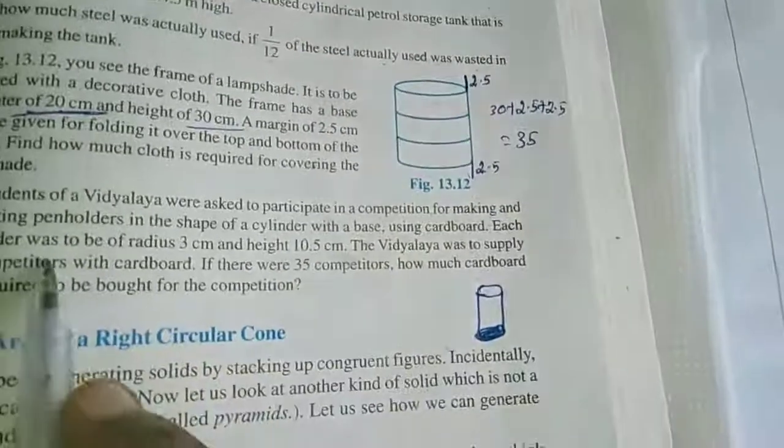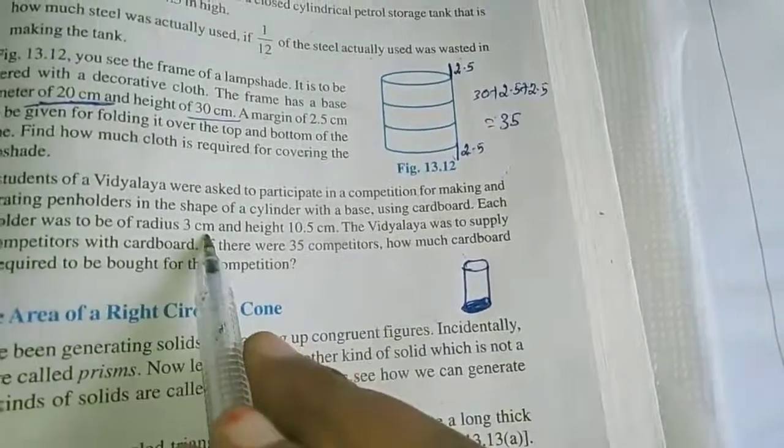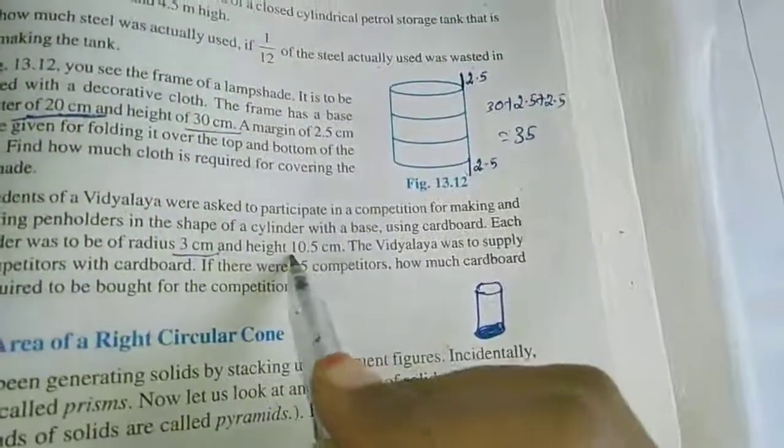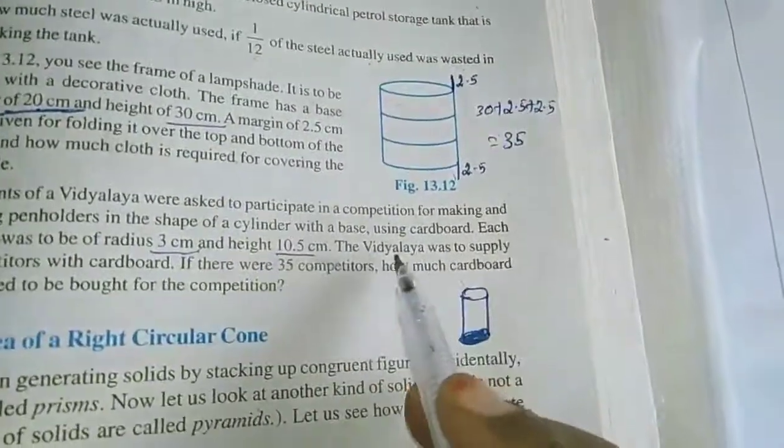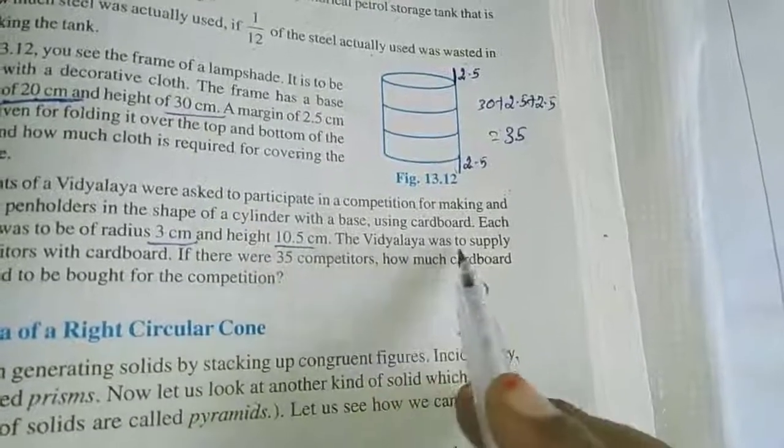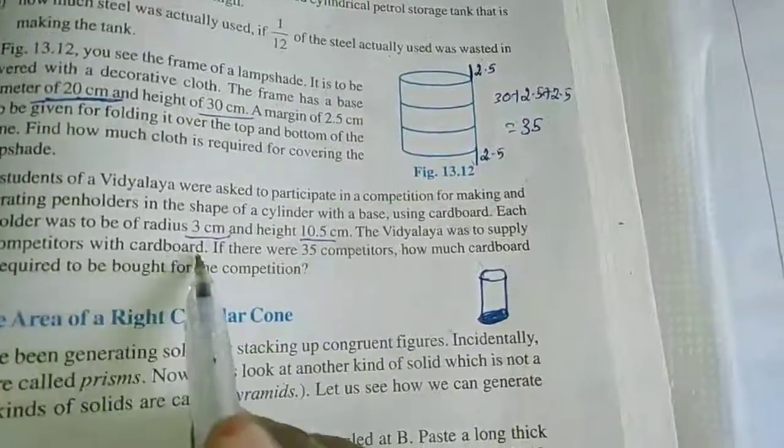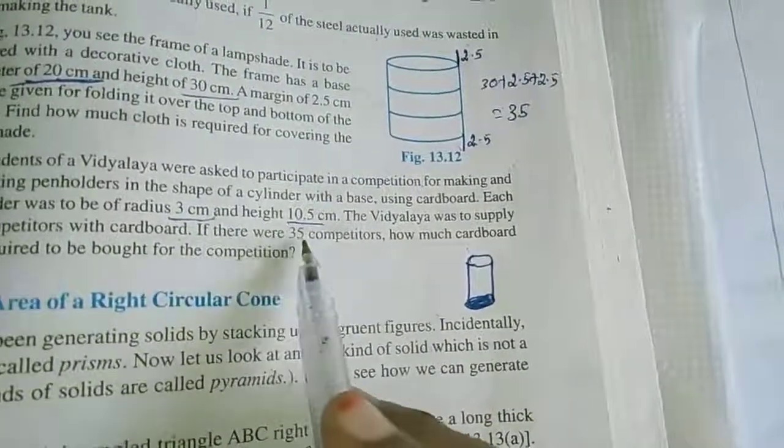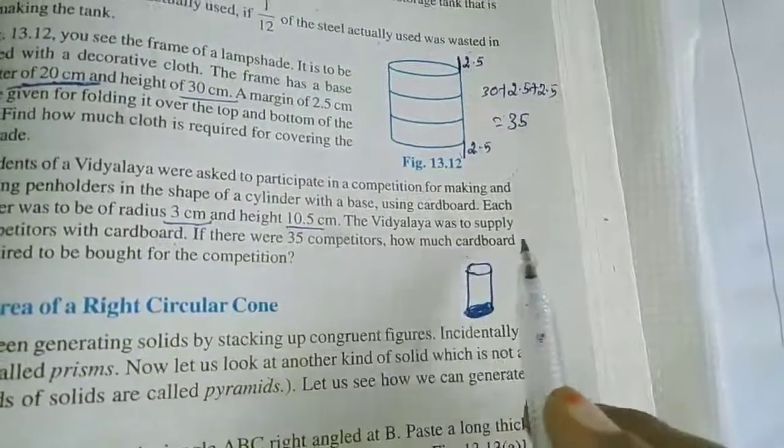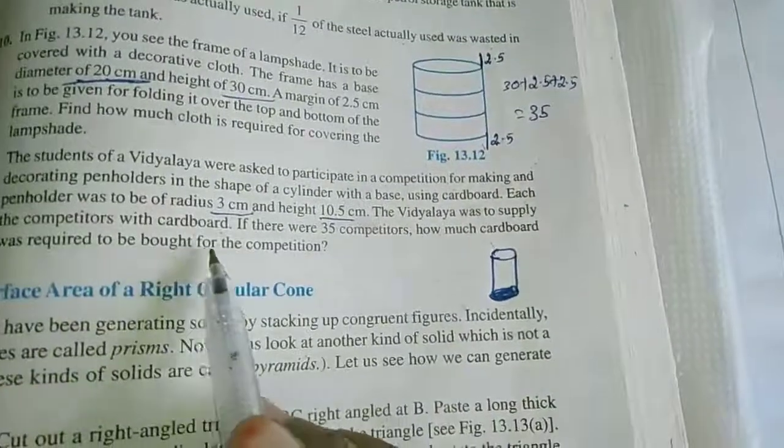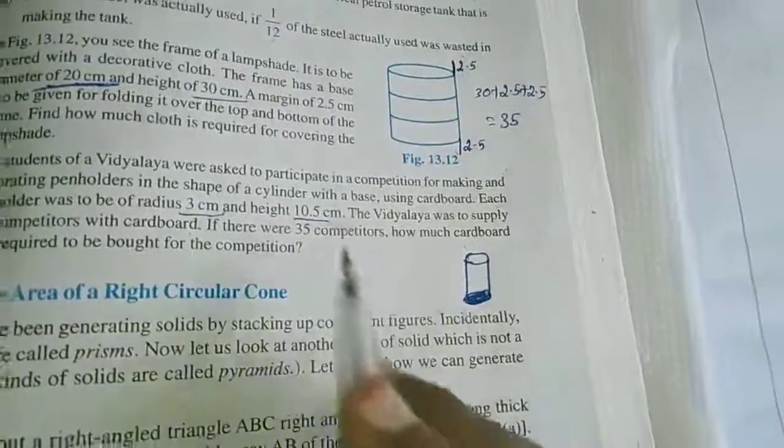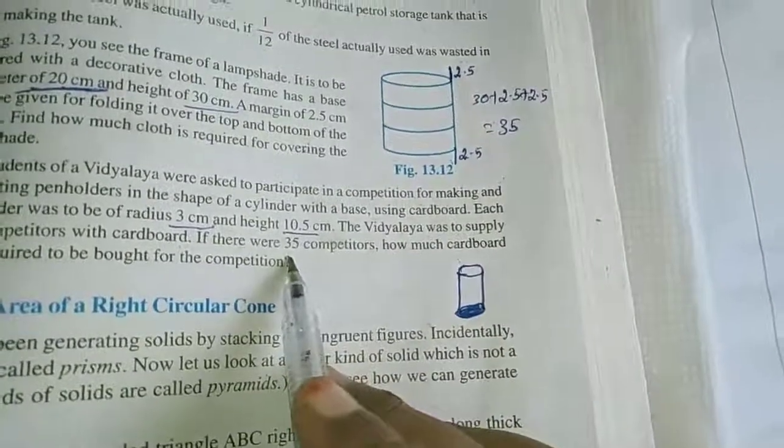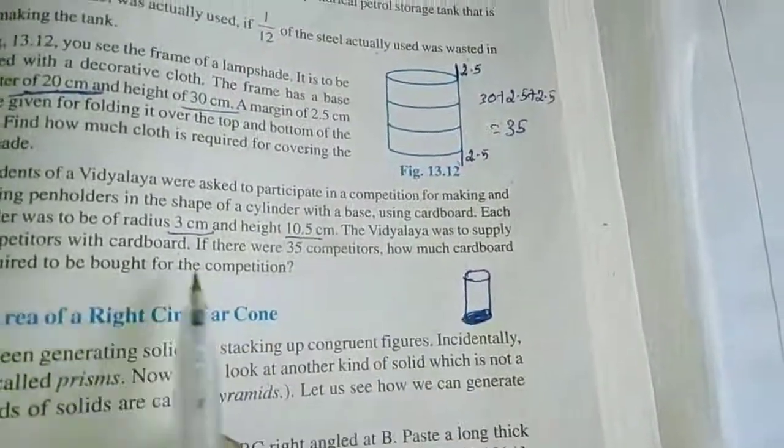Each pen holder was to be of radius 3 cm and height 10.5 cm. The Vidyalaya was to supply the competitors with cardboard. If there were 35 competitors, how much cardboard was required to be bought for the competition?